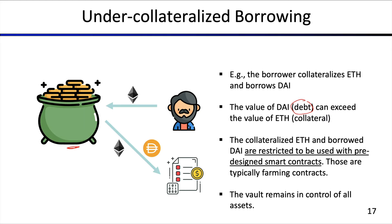What's quite critical in under-collateralized borrowing is that the borrowed DAI and the collateralized ETH are restricted to be used with pre-designed smart contracts. So you can't code up your own contract and send your debt towards it. You must use predefined, pre-designed contracts from the lending and borrowing platform itself.